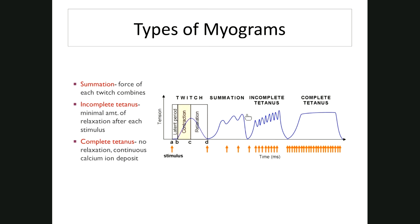Fatigue is a condition of the muscle in which it can no longer contract due to activity or depletion of ATP. A falling pH also causes fatigue — blood pH must be maintained between 7.35 and 7.45. Oxygen debt is the amount of oxygen needed to restore normal pre-exertion conditions after exercise — that's when you get winded and breathe fast and heavy, because your body is in oxygen stress.